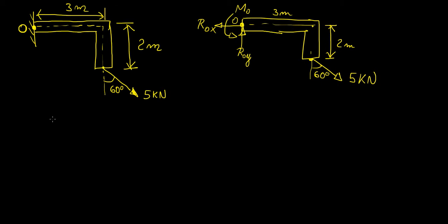So let's start with the forces in the x direction. We're going to assume that all the forces going to the right are positive. So that means we have five kilonewtons times the sine of 60. So basically that's the horizontal component of that force. And then we have minus ROX. So that means ROX is equal to 5 sin 60°.